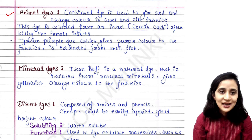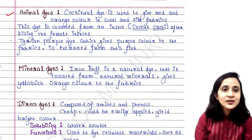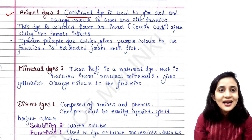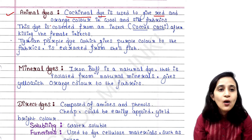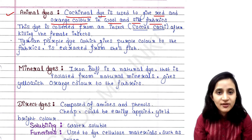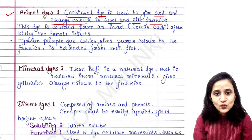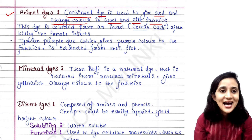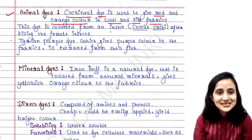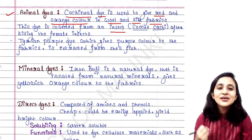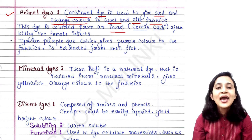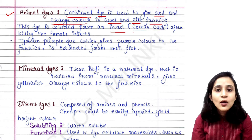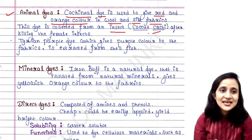Next is animal dye, which is also a natural dye. Cochineal dye is used to give red and orange color to wool and silk fabrics. This dye is collected from an insect — specifically from the Dactylopius coccus cacti insect — which is why it is called an animal dye.